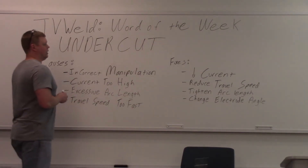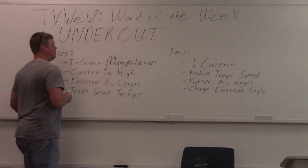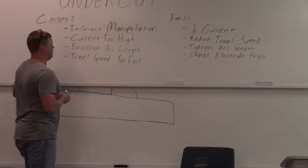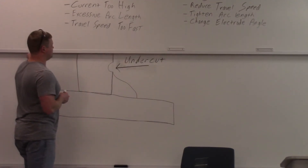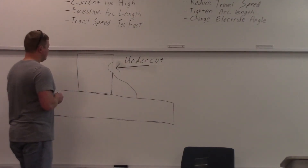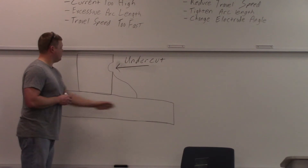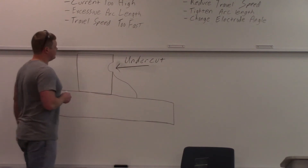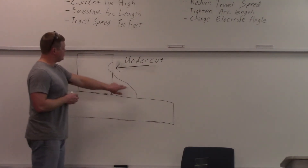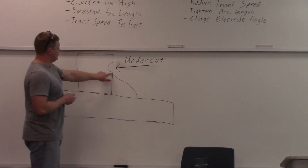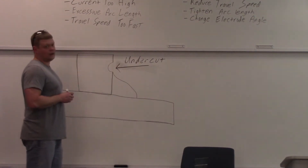So what does that mean? I actually have a little mock-up of a T-joint here. It's exploded so it's really big. This is the T-joint here, this is your fillet weld, and you can see there's a big indent right here at the top. That's your undercut.